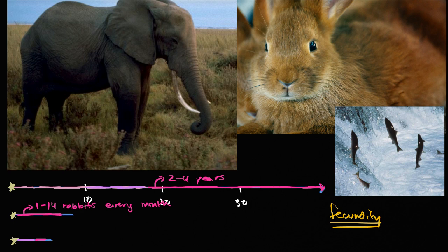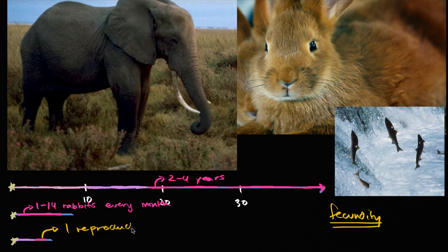So they have one reproductive event. One reproductive event and then death. And people are still understanding why exactly this happens. So one reproductive event, and then they die.